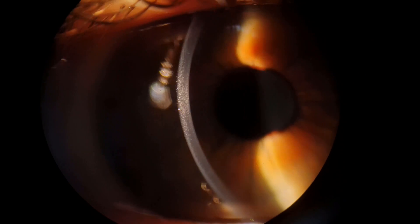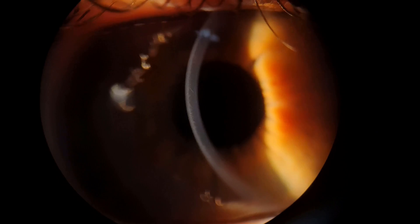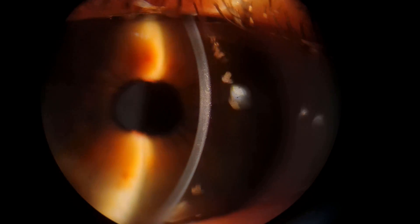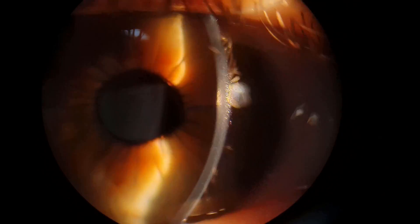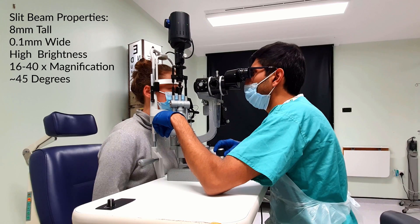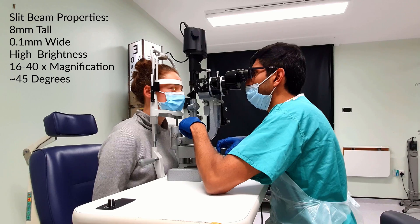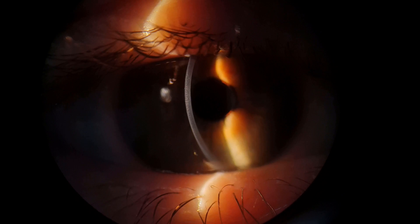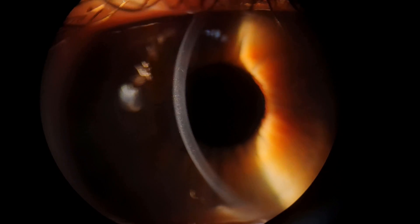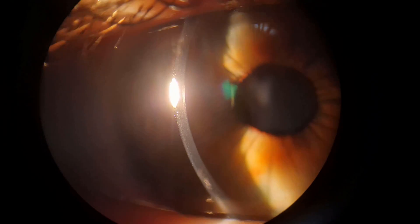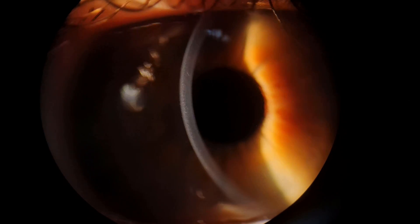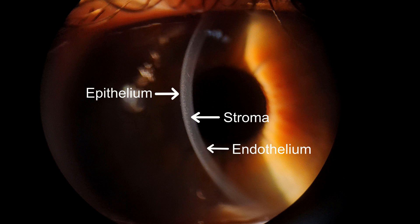If you use a thin narrow beam, you can produce an optical section. This technique can help you to assess semi-transparent structures such as the cornea or lens. For this you should use a tall, thin beam with high brightness intensity. Move the illumination arm to around 45 degrees and adjust appropriately. As you can see, it optically dissects the cornea and you can see a cross section. You can use increased magnifications to help you define specific structures such as the epithelium, stroma or endothelium.